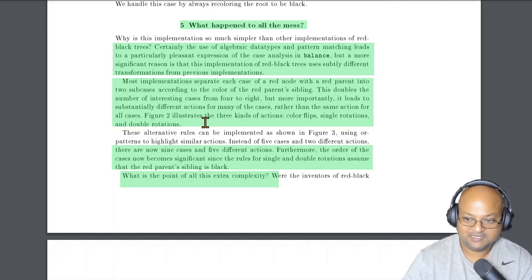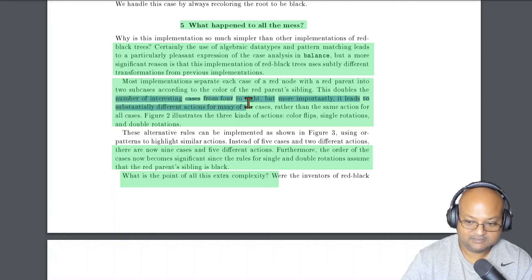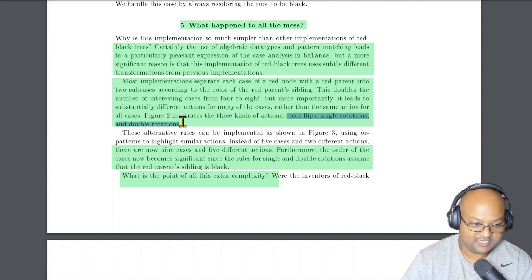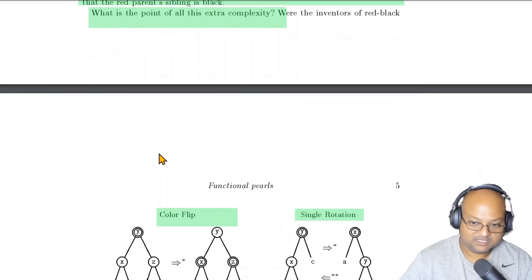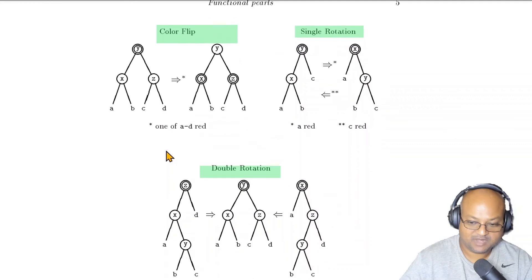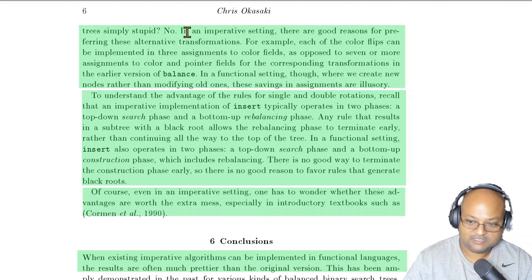So what happened? As the author said, what happened to all the mess? The way red-black trees are typically explained in most textbooks has about eight cases, and it is framed in terms of color flips and single and double rotations of the tree nodes. But you might very well ask, why do that? What is all that extra complexity buying you? And as the author points out,